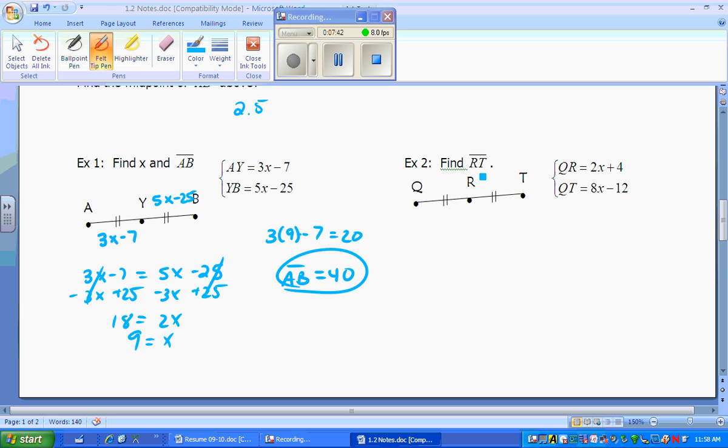Now, for example 2, we want to find the length of RT. Well, once again, we still need to get X. Same idea, R is in the middle because QR and RT are congruent to each other by the markings, so let's mark our picture. So QR is 2X plus 4, but this time they gave you QT. They gave you the whole thing, which is 8X minus 12. Well, now, this isn't the same as example 1. We can't set these two equal to each other. This is 2 of one of these. So what you can do is you can say, wait, if this is 2X plus 4, set this equal to 2X plus 4, and now you can solve it.